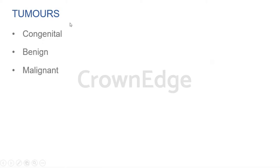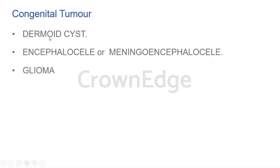The nasal cavity can also have tumors — congenital, benign, or malignant. Congenital tumors include dermoid cysts, encephalocele, meningoencephalocele, and glioma. A dermoid cyst occurs as a midline swelling under the skin in front of the nasal bone, usually associated with the ethmoidal or frontal sinus, seen in infants and children. Encephalocele involves herniation of brain tissue with meninges through a congenital defect in the cranial bone, sometimes presenting through the nose and requiring neurosurgical intervention.